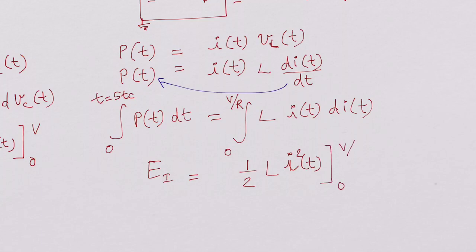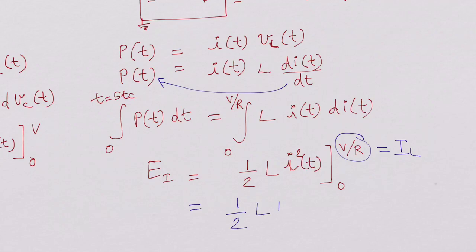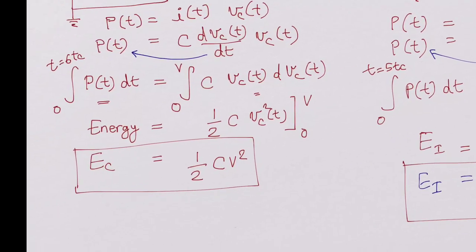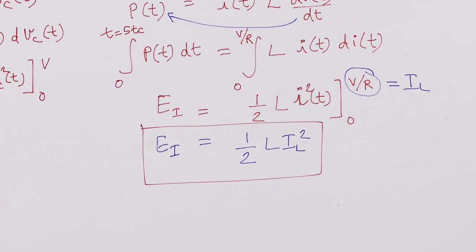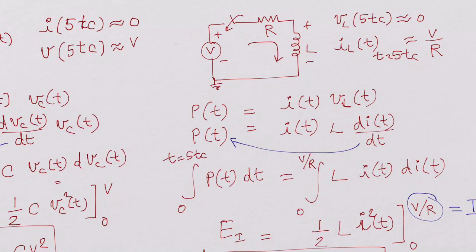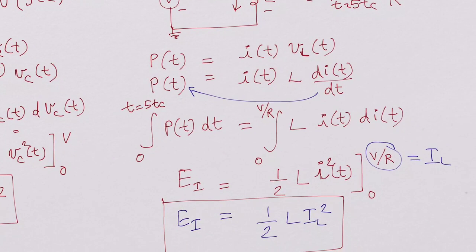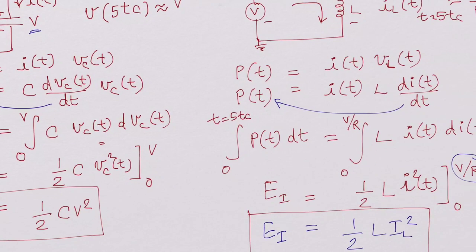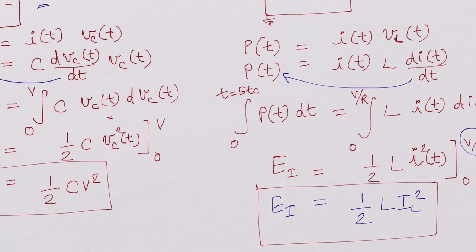Evaluating from zero to V/R — let's call this final current capital IL — the energy stored in an inductor is ½LIL². So we saw that the energy stored in a capacitor is ½CV², and the energy stored in an inductor is ½LIL², where IL is the steady-state current flowing after the voltage across the inductor has dropped to zero. These are the equations for energy stored in a capacitor and energy stored in an inductor: ½CV² and ½LI².